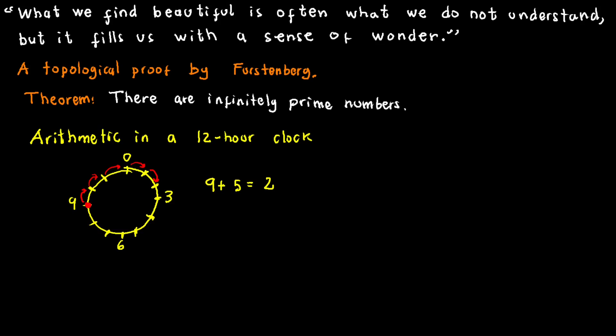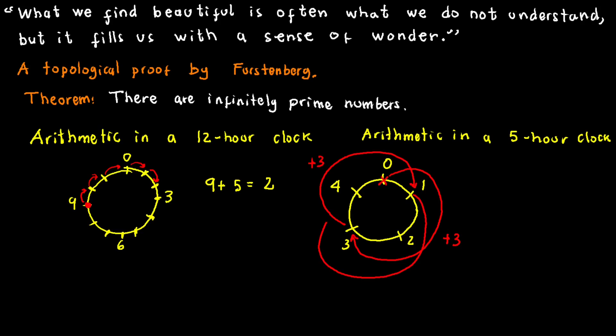This looping effect occurs because the clock numbers repeat every 12 units. Now, let's extend this idea to clocks with any non-zero numbers of hours. Consider a clock with 5 hours. If we go forward 3 hours and then multiply that by 3, we find ourselves at 4.